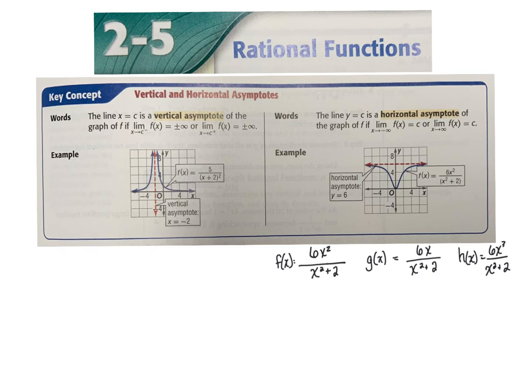We talked a little bit about this last year in Algebra 2. In rational functions, you sometimes have areas of the function where the graph approaches but never reaches. These can be vertical or horizontal asymptotes — a line that is not actually part of the graph, but it helps you see what is happening to the graph.